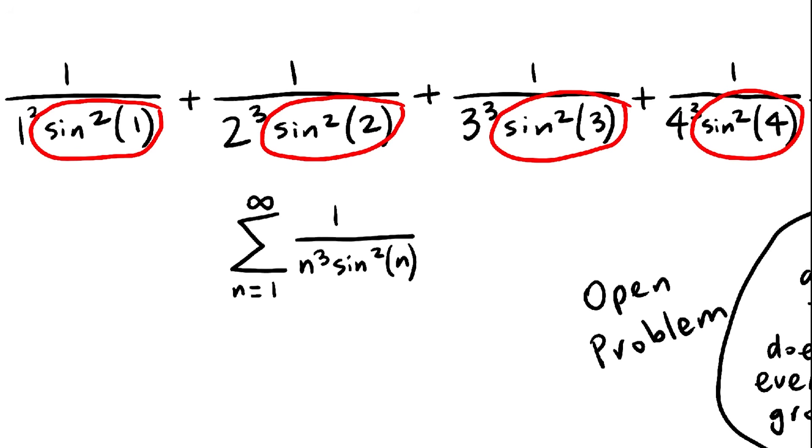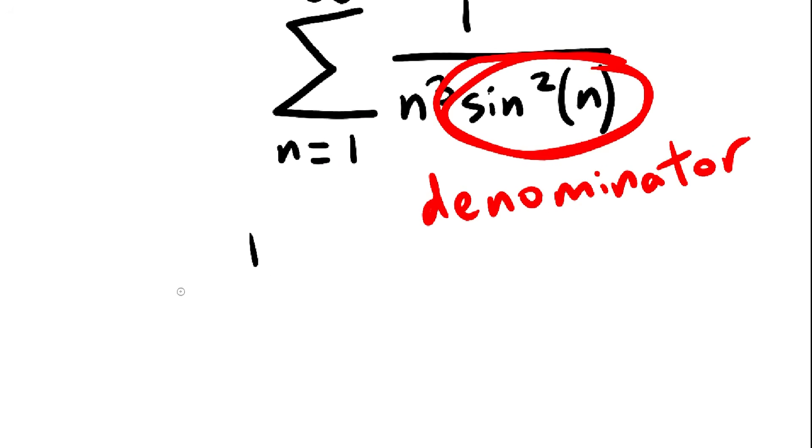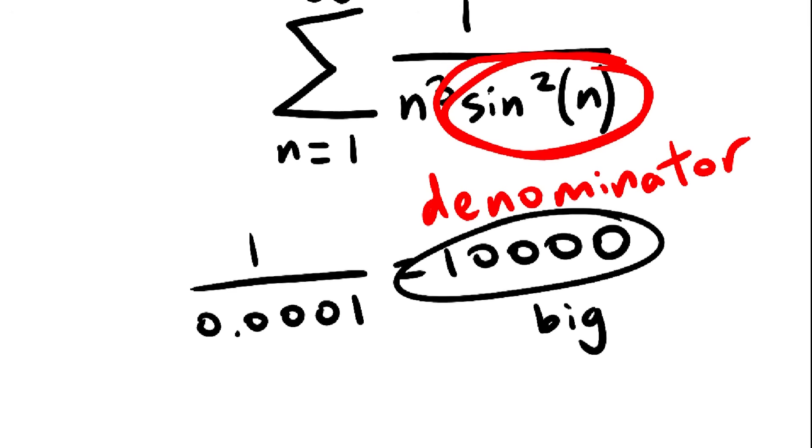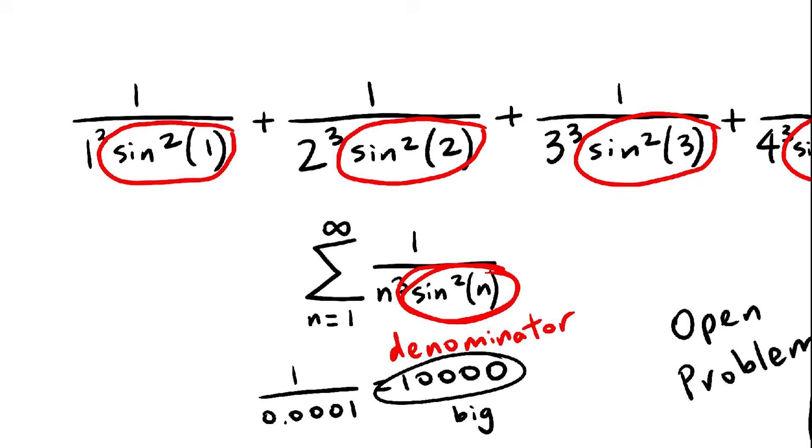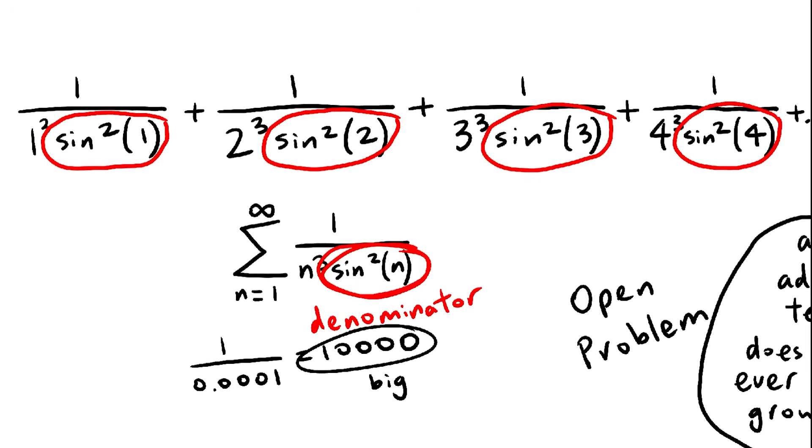Now what does this mean for our infinite sum? We see that sine squared of x is in the denominator. So if sine of x is very close to 0, then this term suddenly gets really big. But of course, we don't know when sine of x gets very close to 0, which is what makes this series unpredictable.